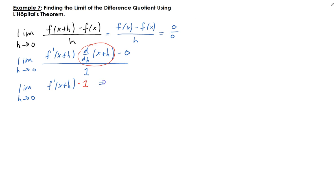So now, this is just the limit as h equals to 0 of f prime of x plus h. Plugging in h equal to 0 gives us f prime of x.